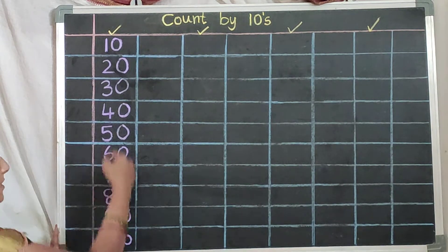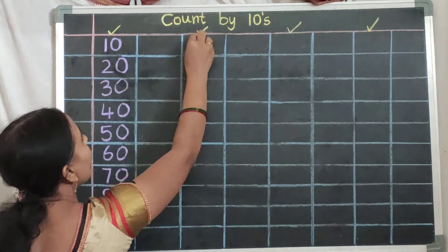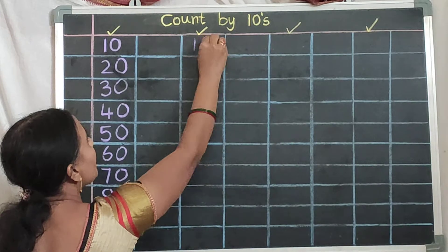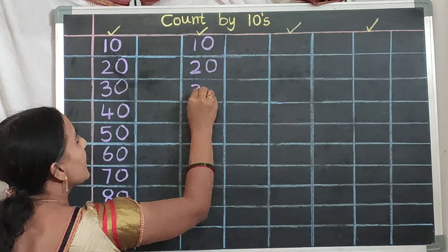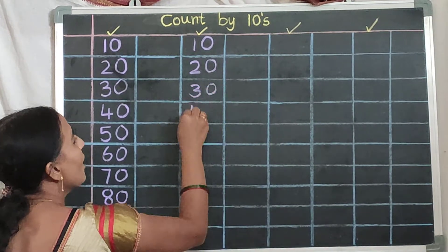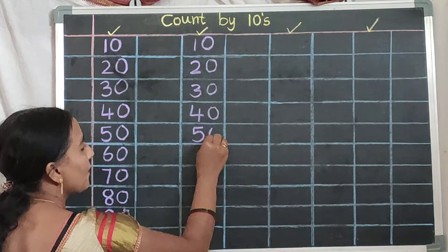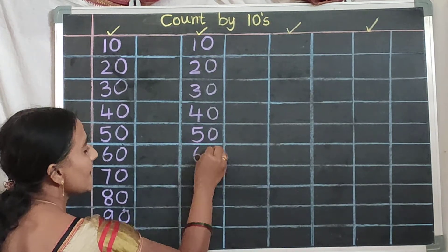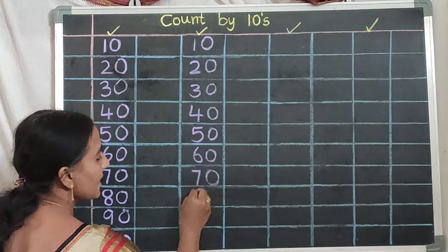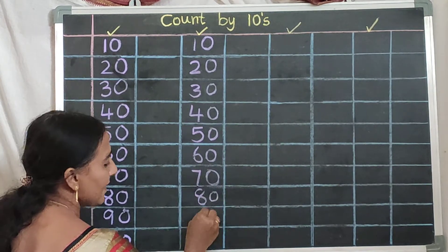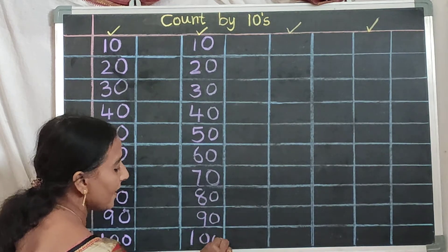This line is completed. Leave this line, go to next line. Same — you should write: one, zero, ten. Two, zero, twenty. Three, zero, thirty. Four, zero, forty. Five, zero, fifty. Six, zero, sixty. Seven, zero, seventy. Eight, zero, eighty. Nine, zero, ninety. One, zero, zero — one hundred.